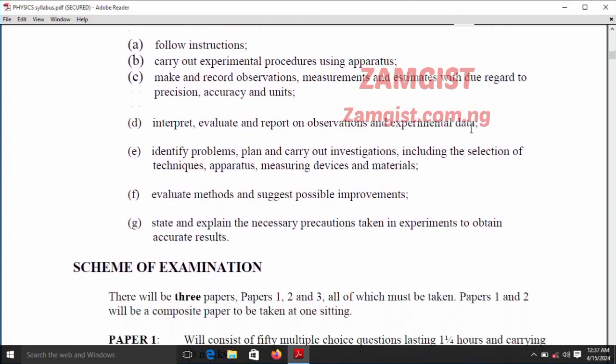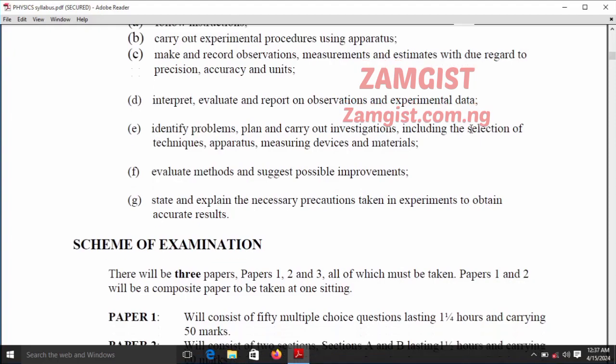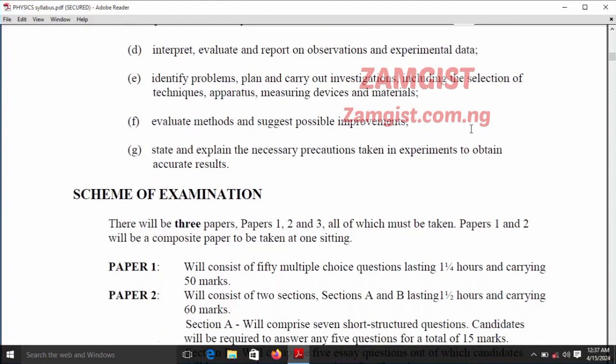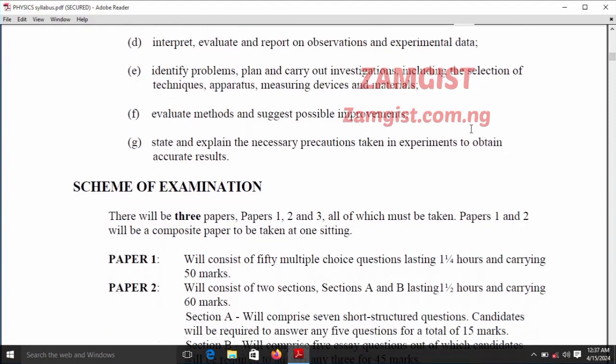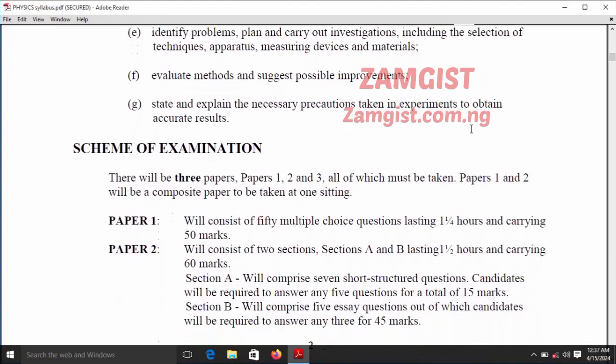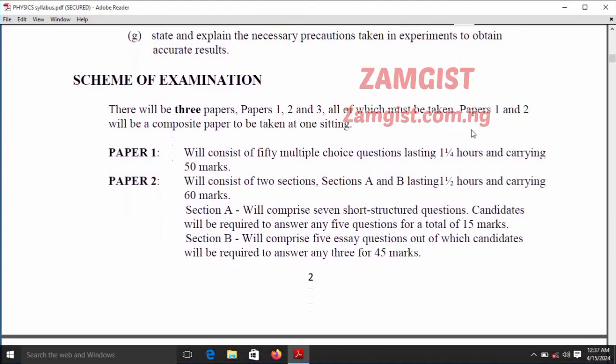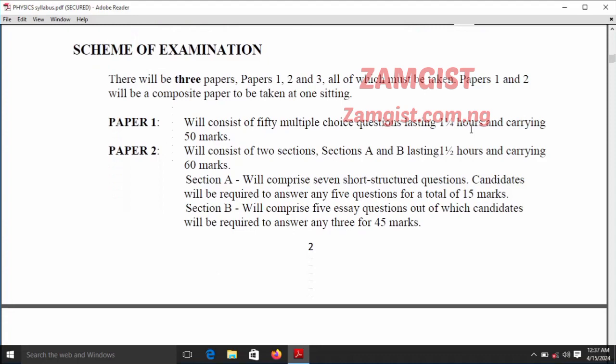After this, we are moving to the scheme of the examination. This will tell you how many papers the physics examination will consist and sections. So, we have three papers in physics examination. The first paper is objective, which contains 50 multiple choice questions.